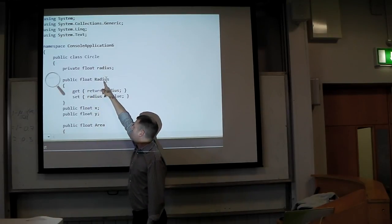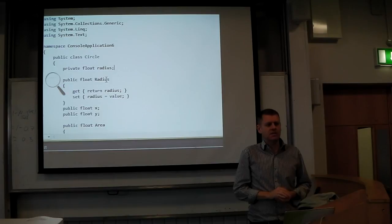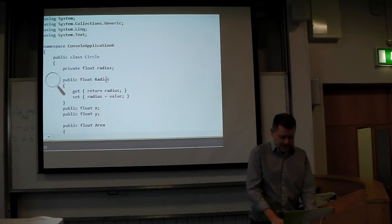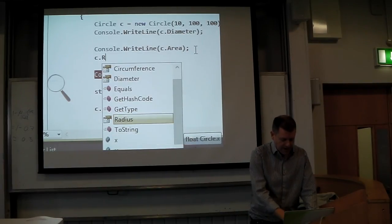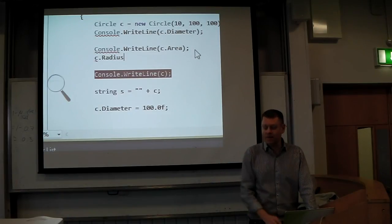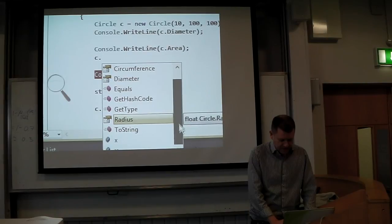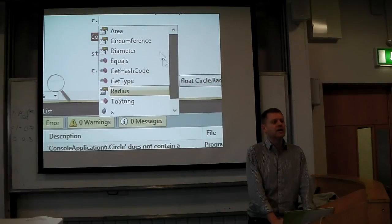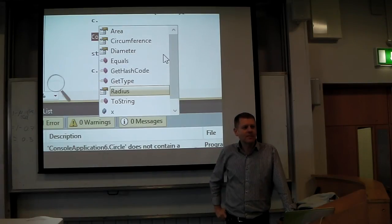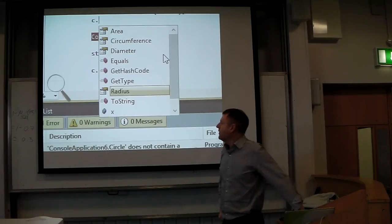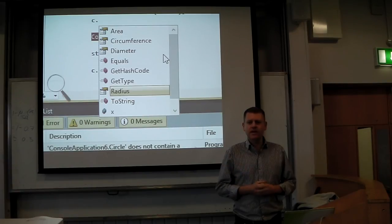Now the property is called Radius with an uppercase R, and the field is called radius with a lowercase r, and it's been made private. Private means you can't access it outside of the class. You can do c.Radius with an uppercase R and it calls the get and set accessors. But if you try c.radius with a lowercase r, it doesn't even show you — because it's private, it's hidden from the rest of the program. The main thing today is fields and properties. Next time we'll do another example of this and start looking at inheritance.